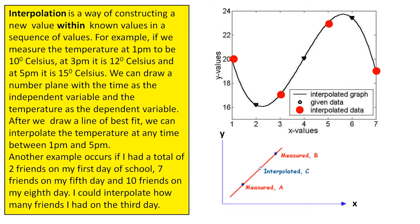Another example occurs if I had a total of 2 friends on my first day of school, 7 friends on my 5th day and 10 friends on my 8th day. I could interpolate how many friends I had on the 3rd day.